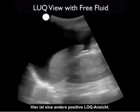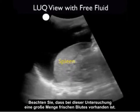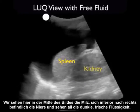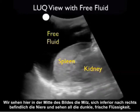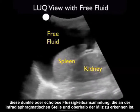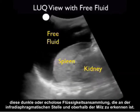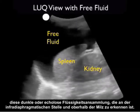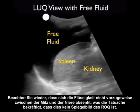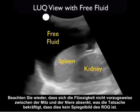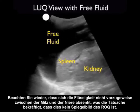Here's another positive left upper quadrant view with a larger amount of fresh fluid present. We see the spleen in the middle of the image, the kidney inferiorly to the right, and all the dark fresh fluid — the dark or anechoic collection — seen infradiaphragmatic and above the spleen. Notice again that the fluid is not preferentially layering out between the spleen and the kidney, reinforcing the point that this is not a mirror image of the right upper quadrant.